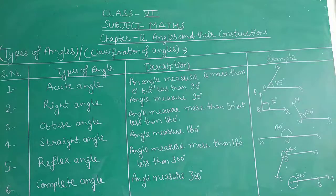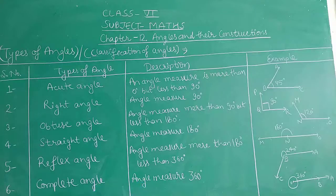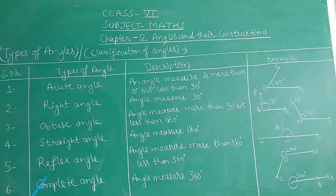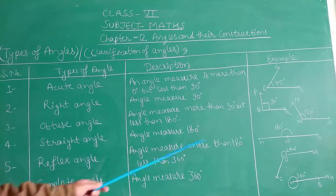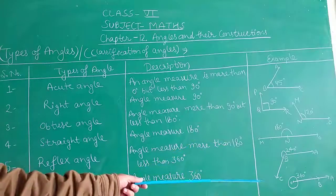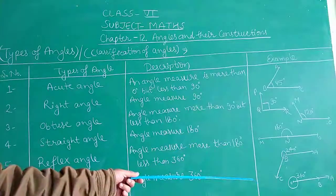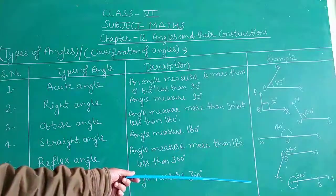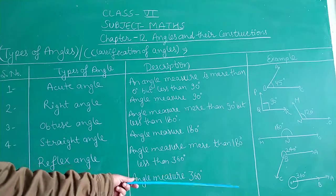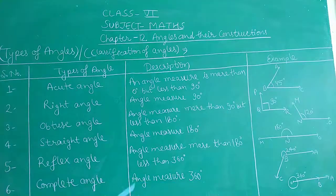The sixth type is complete angle. A complete angle has a measurement of 360 degrees. As given in the figure, angle AOB measuring 360 degrees is called a complete angle.